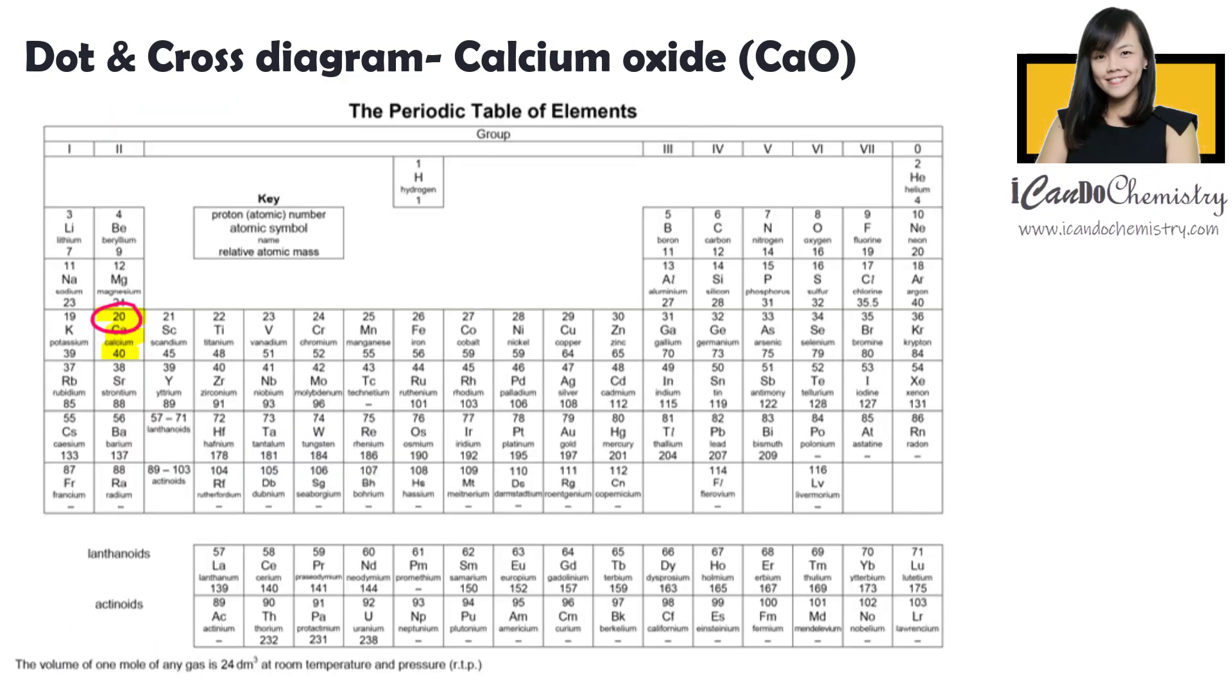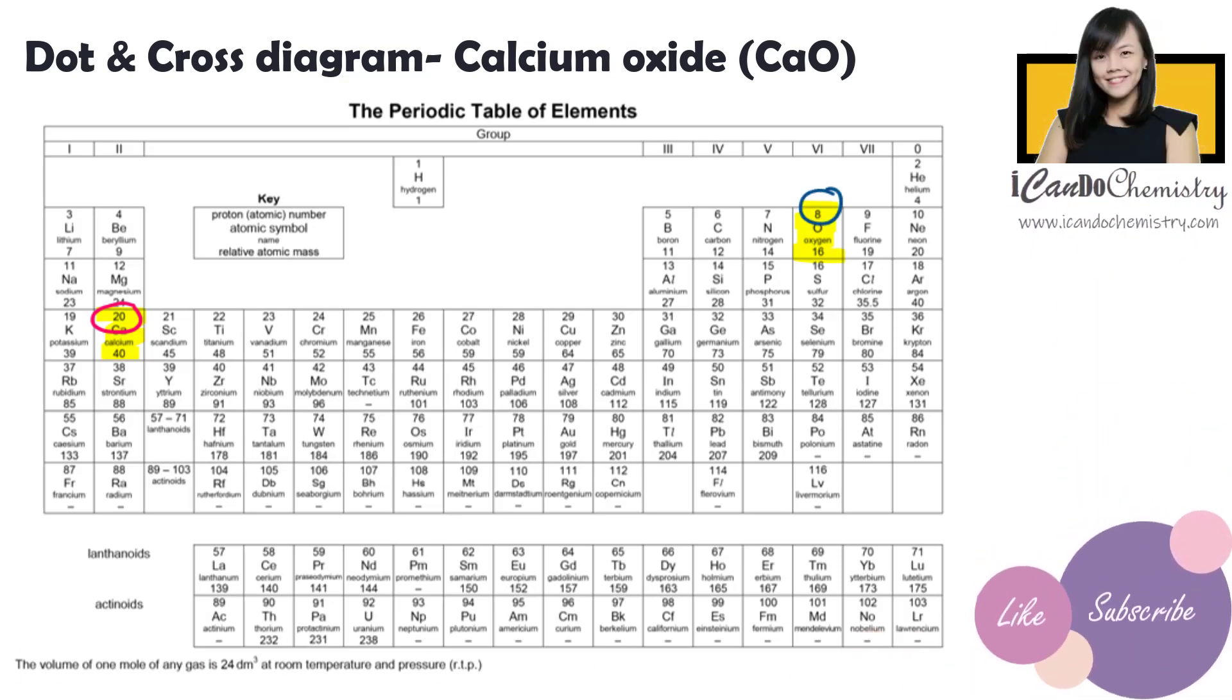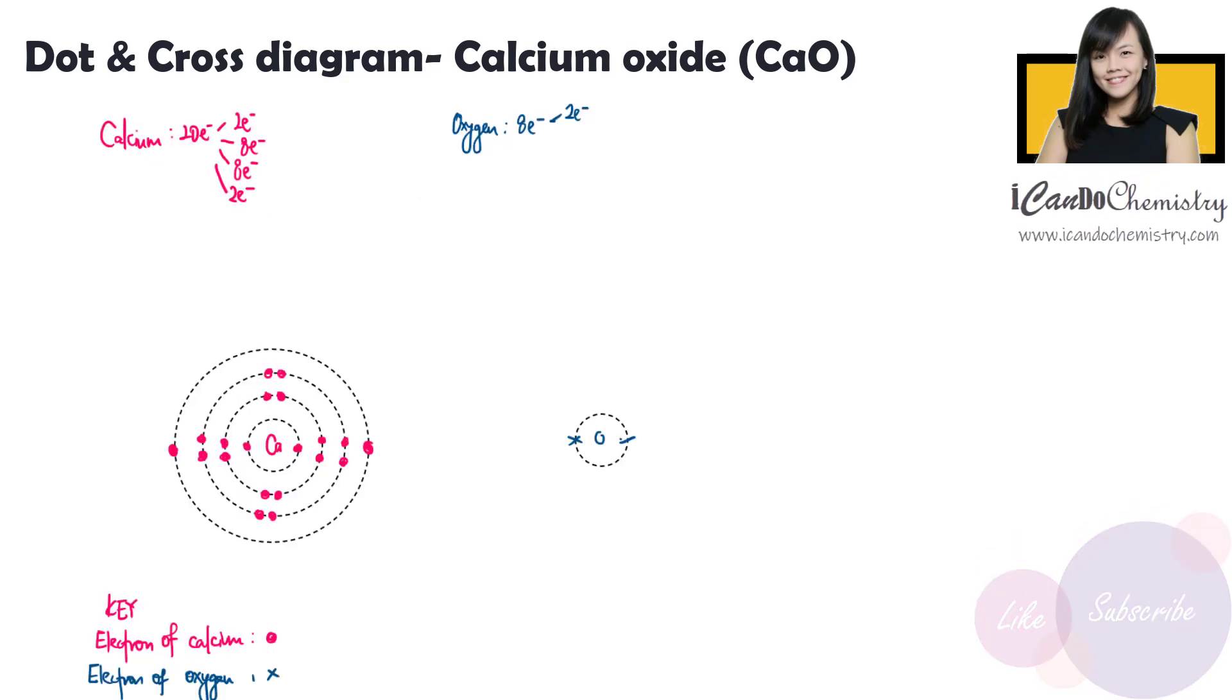Now the non-metal in this compound is oxygen. It is here in the periodic table. Oxygen has eight electrons. Let's use cross to represent the electrons of oxygen. The first shell holds two. Second shell holds six.